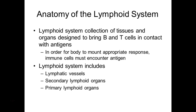Lymph nodes filter lymph. The organ that filters your blood is your spleen — that's the one organ you can actually live without, though you probably wouldn't want to. Your primary lymphoid organs are where your B cells and T cells are born and educated: bone marrow for B cells, where they leave fully educated.